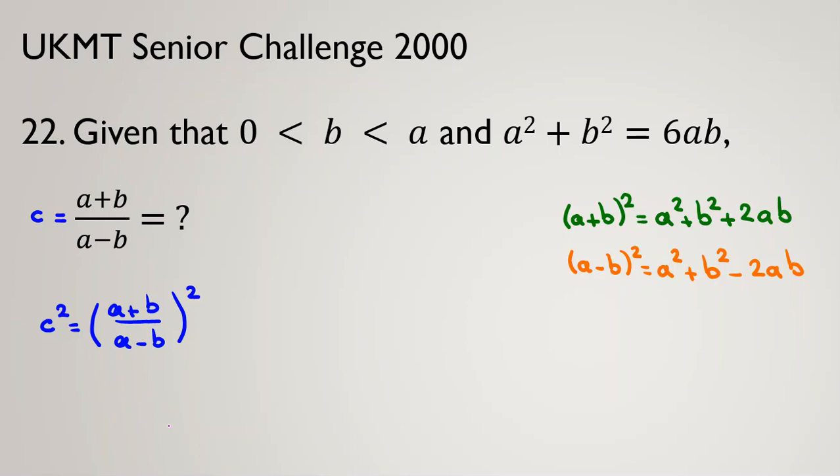By the power rule, if I have (x/y)² or (x/y)^m, it equals x²/y² or x^m/y^m. Applying this here, c² = (a+b)²/(a-b)².